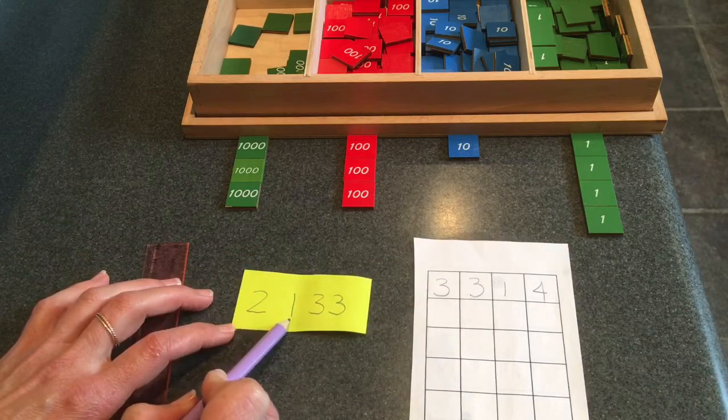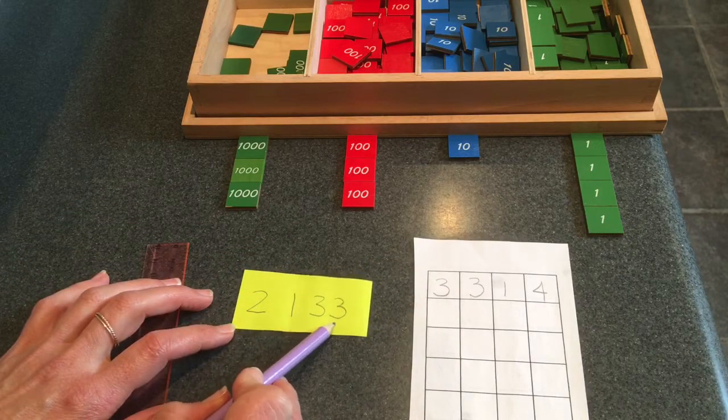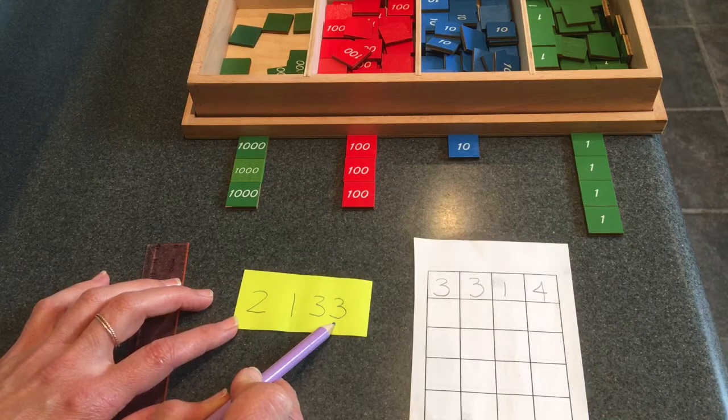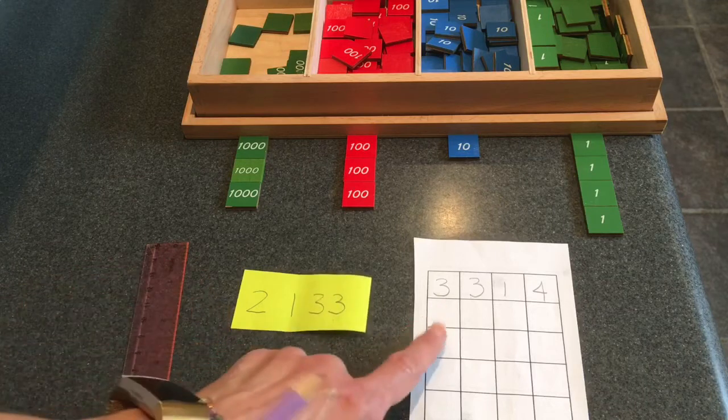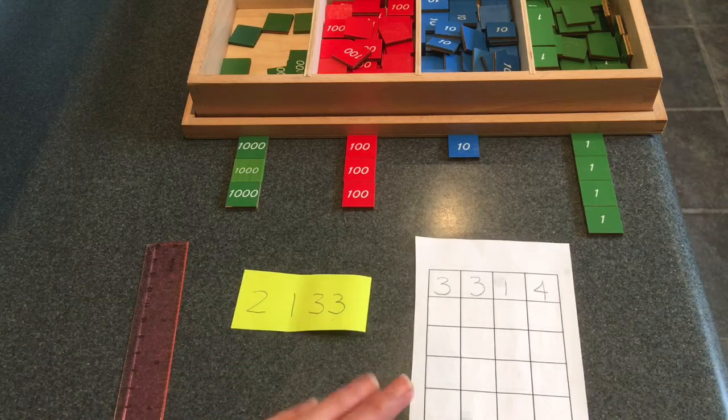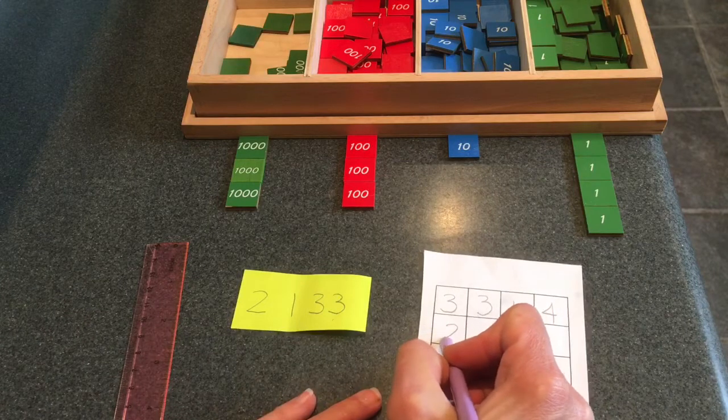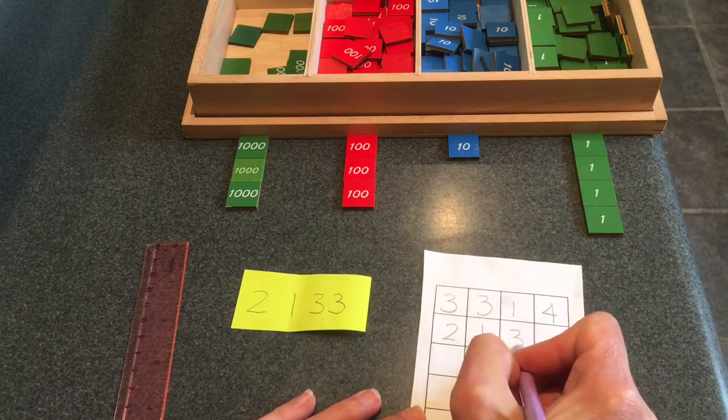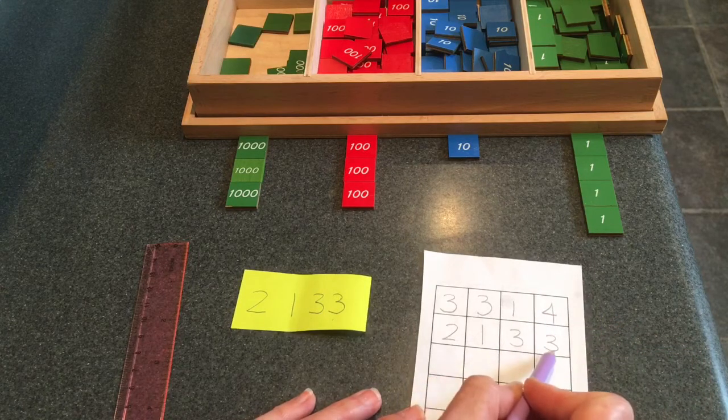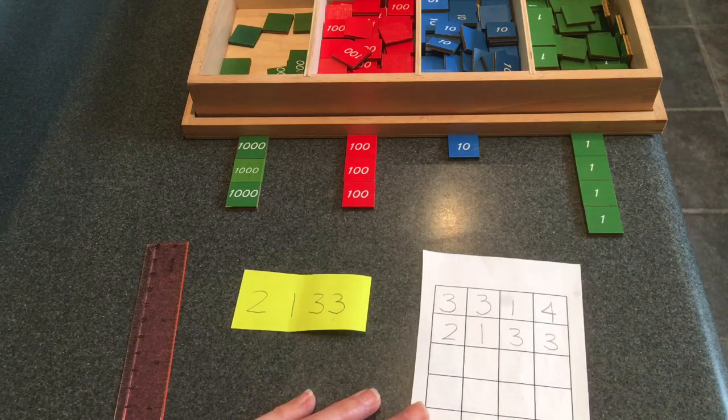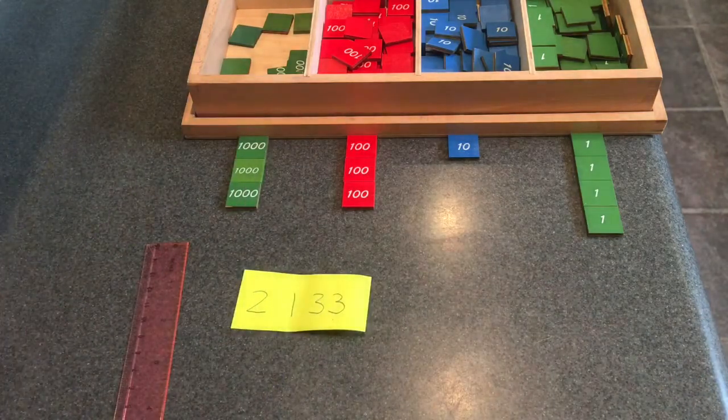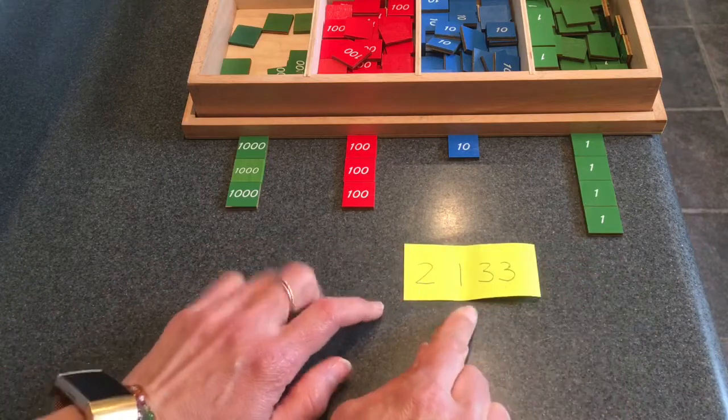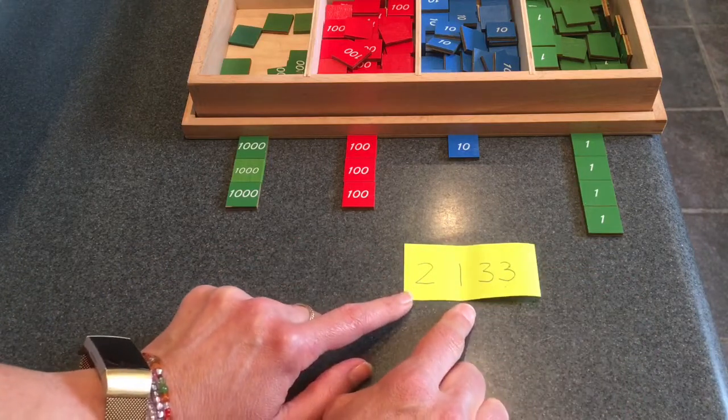So again, 2,133. Can you write that on your small piece of paper? Let's write it underneath our minuend as well. 2,133 or one hundred, three tens and three units. I'll put this to the side and my ruler as well. I don't need it right now.